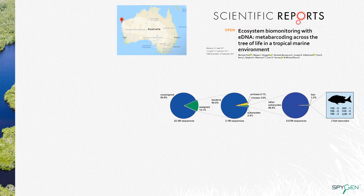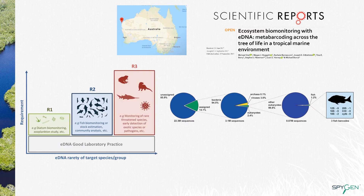They obtained 22 million sequences, and of these 22 million sequences, only three were fish DNA. So in the complex mixture that is eDNA, not all species have the same quantity of eDNA. Depending on the species we want to analyse and the main goal of our study, the requirements of the experiments and analysis should be adapted — in terms of sampling strategy, laboratory protocol, marker choice, or laboratory facilities. For example, it is not the same to do an analysis for diatom biomonitoring as it is to monitor rare and threatened species.